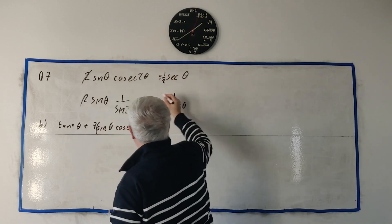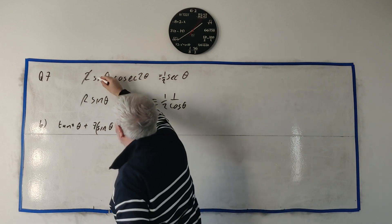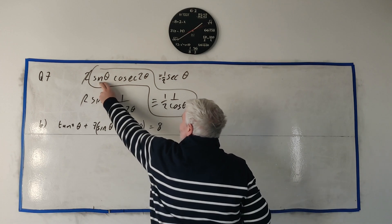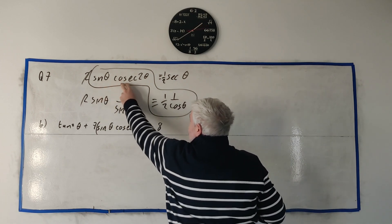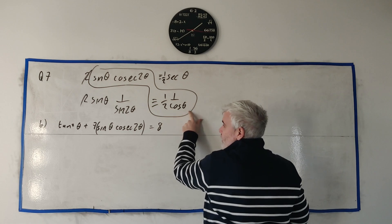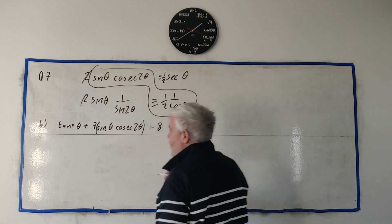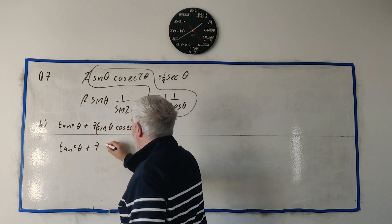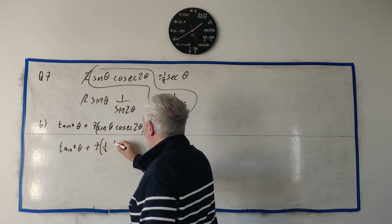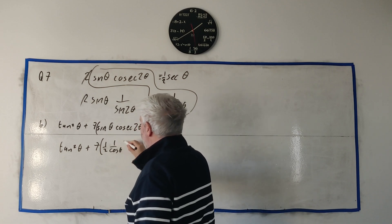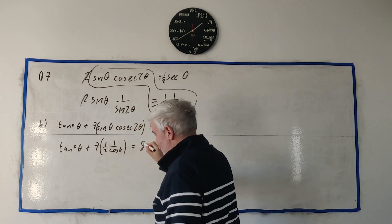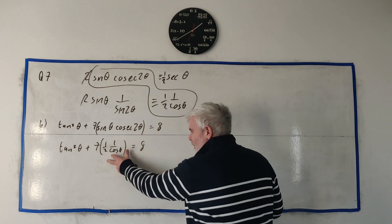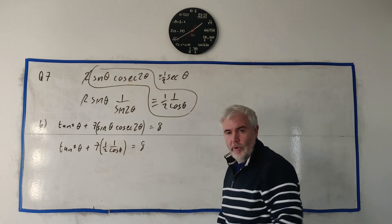So to do that, first thing I'll point out that what I have here is nearly what I have here, except for this 2. So let's go ahead and move this 2 over and turn it into a half over here and do the same on this row. And I'm going to use this identity here.